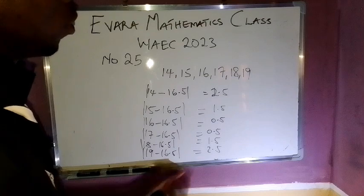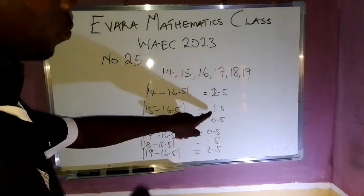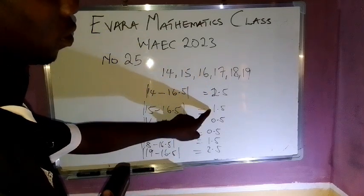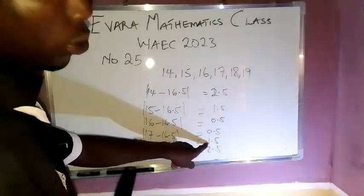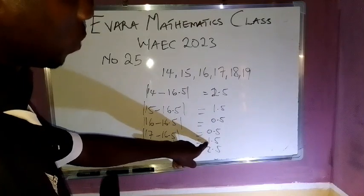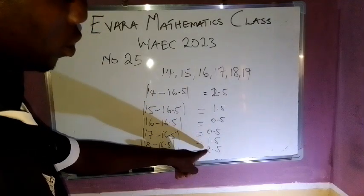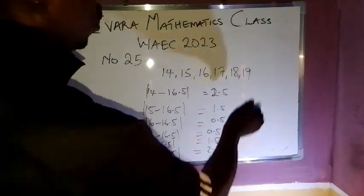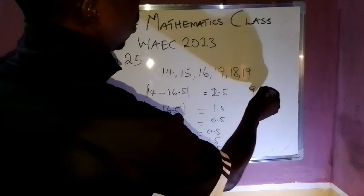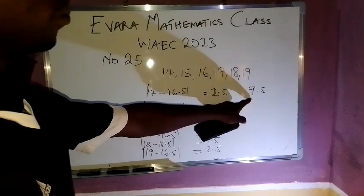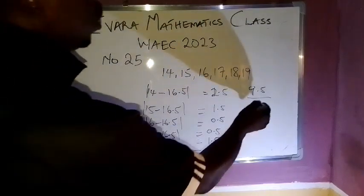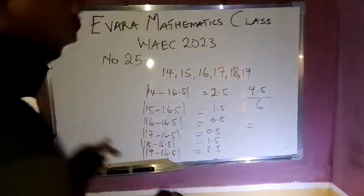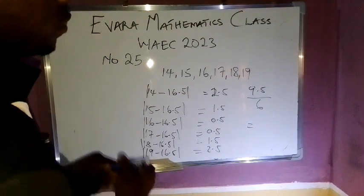So the next thing is to add up all these. 2.5 plus 1.5 is 4, 4.5. 5.5 plus 2.5 and plus 1.5, that is 7. Now 7 plus 2.5, that gives 9.5. So this total sum of 9.5 is now divided by how many digits are there? 6. So if you divide 9.5 by 6.